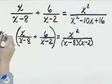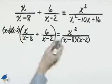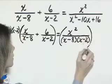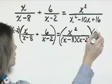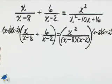Multiply x minus 8 times x minus 2 on the left, and x minus 8 times x minus 2 on the right.